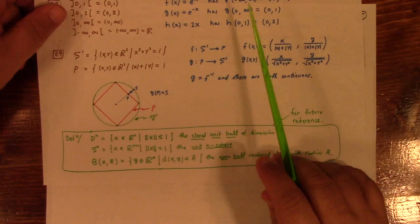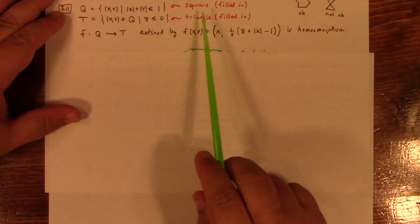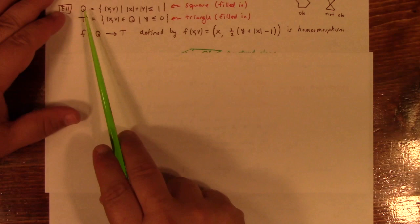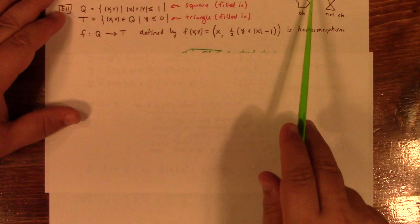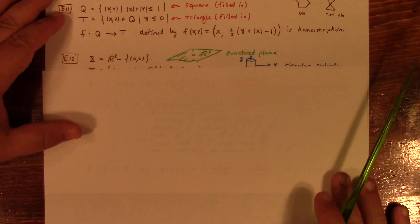And so, example 11 is a more concrete, less weird version of that, which is that if you take this filled-in square and the filled-in triangle, then this mapping right here is actually a homeomorphism. So, you can map the square to the triangle. Now, here I'm actually talking about the shaded-in square or the shaded-in triangle. So, this defines a homeomorphism.